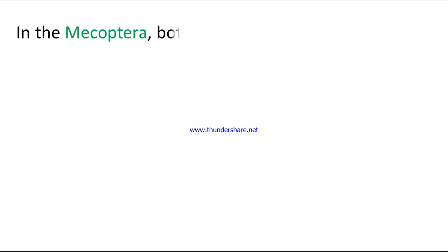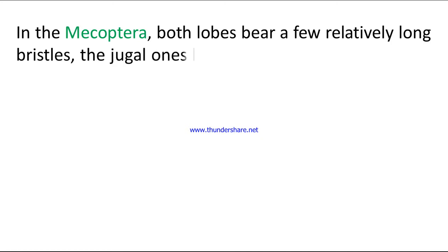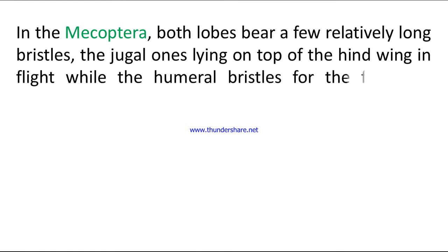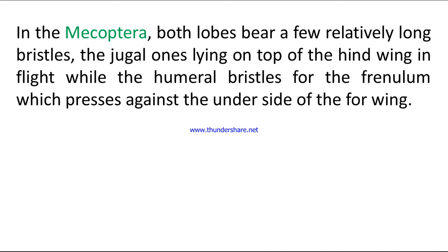In the Mecoptera, both lobes bear a few relatively long bristles. The jugal ones lying on top of the hind wing in flight, while the humeral bristles form the frenulum which presses against the underside of the fore wing.